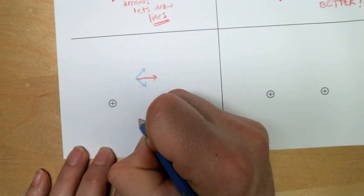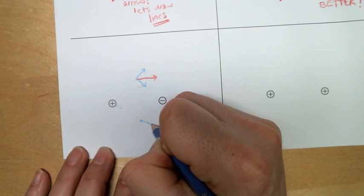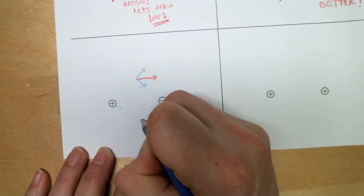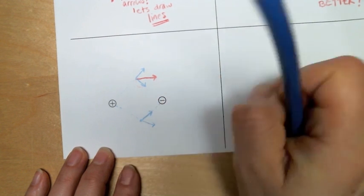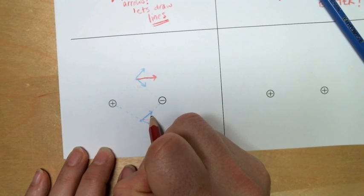How about if we place another positive test charge here? Similarly, it will be repelled from the positive charge, and then it will be attracted to the negative charge. Once again, we'll have to add the two vectors, and once again, we're going to end up with a vector that is entirely to the right.